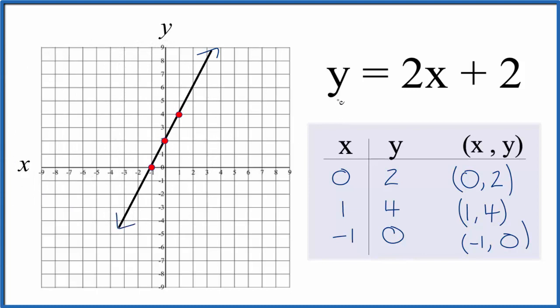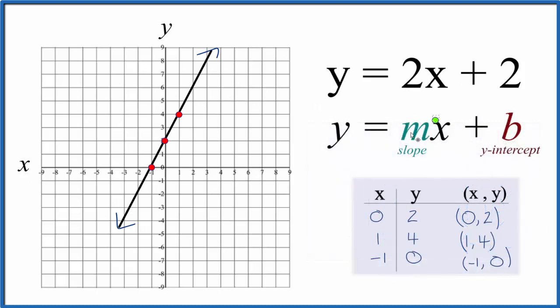This is the graph for y = 2x + 2. Now let's check our work with the slope-intercept formula. We have y = mx + b. b is the y-intercept, where we intercept the y-axis, and b is 2, so we find the y-axis at 2 right there.